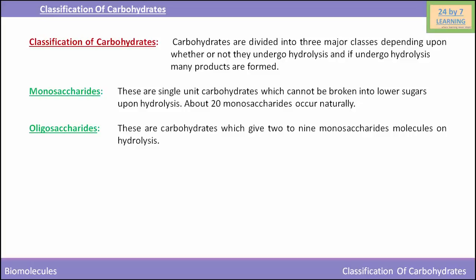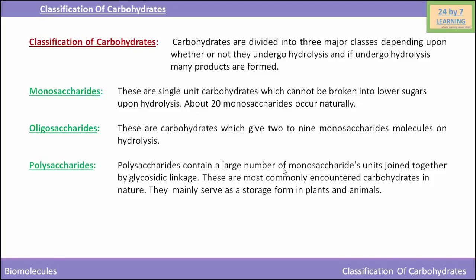The third class is polysaccharides. Polysaccharides contain a large number of monosaccharide units joined together by glycosidic linkages. These are the most commonly encountered carbohydrates in nature and mainly serve as a storage form in plants and animals. Starch is a polymer of glucose and serves as a storage form of energy in plants. Glycogen is also a polysaccharide serving as a storage form of energy in animals. Other examples include inulin, chitin, and peptidoglycan.